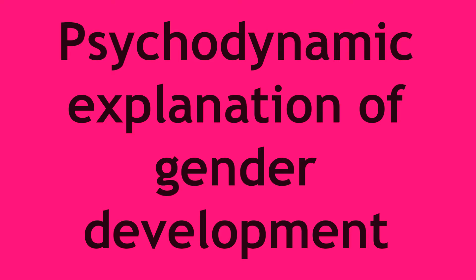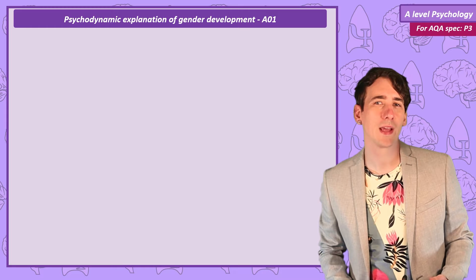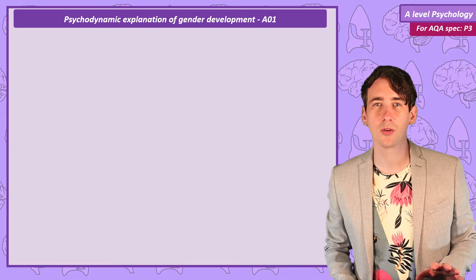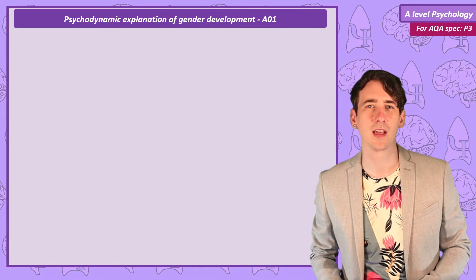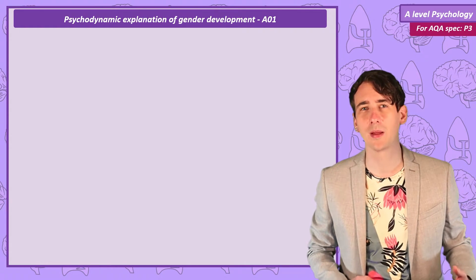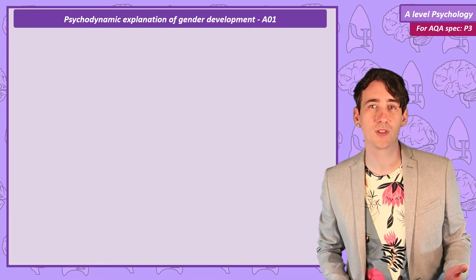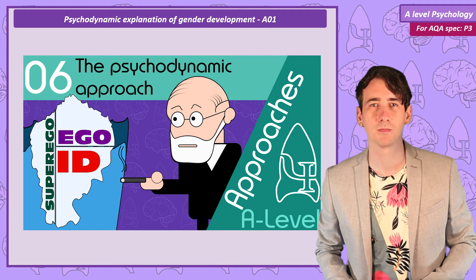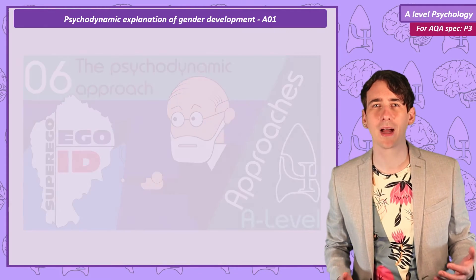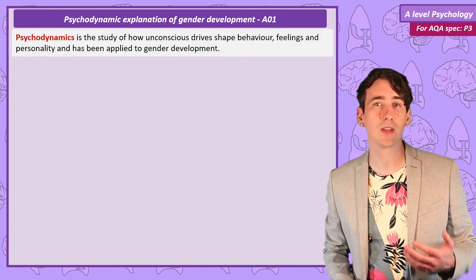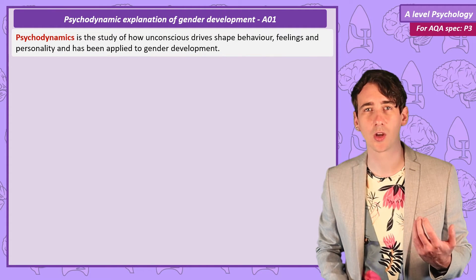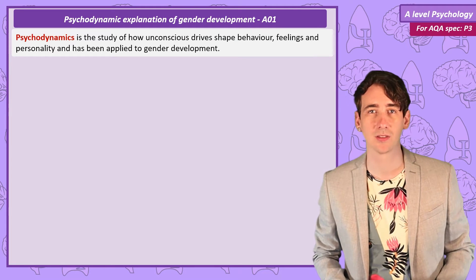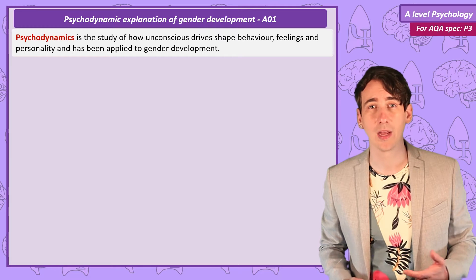Psychodynamic explanation of gender development. I imagine you already have a general understanding of Freudian theory. I'm going to cover everything you need to know for the gender unit, but Freud has a few complex ideas that I'll mention but not be able to fully explain. So if you're feeling rusty on Freud's ideas, I suggest checking out my psychodynamics video in the approaches unit first. Psychodynamics is the study of how the interaction between our unconscious and conscious mind influences what we do, what we feel, and how our personality is expressed. These ideas have been applied to gender development.